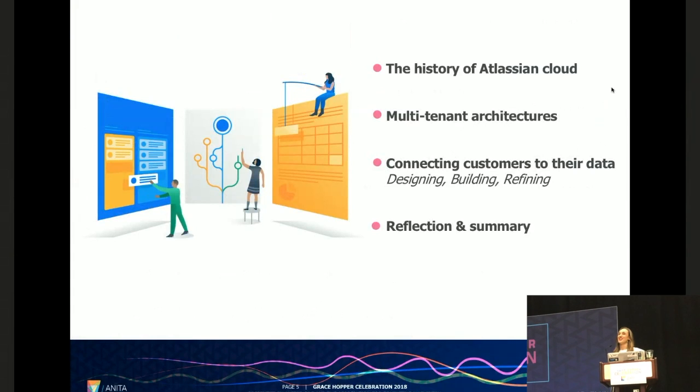So in order to get you to the stage where you can answer all of those questions, I'm going to be running you through a couple things. We're going to start off with the history of Atlassian Cloud and then we'll move on to speak about multi-tenant architectures and what they actually are. We'll then be speaking about how we at Atlassian connected our customers to their data within a multi-tenant architecture, breaking that down into three different phases: designing, building, and refining. We'll then finish up on a reflection on what we think we probably could have done a bit differently and a summary at the end.